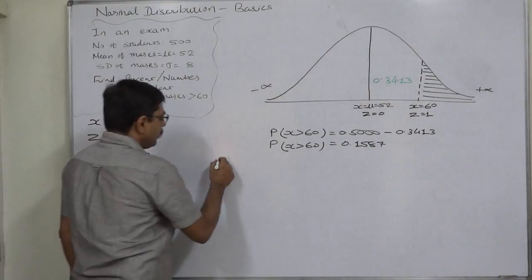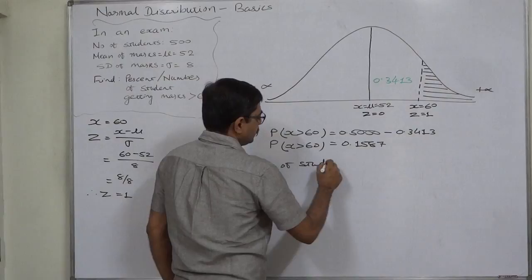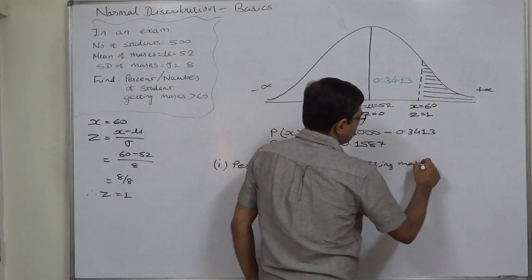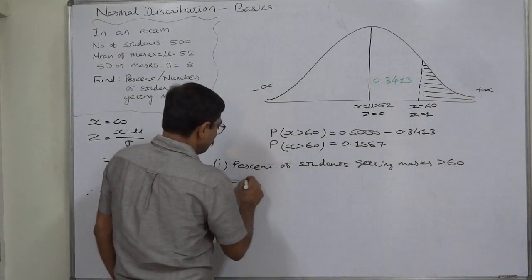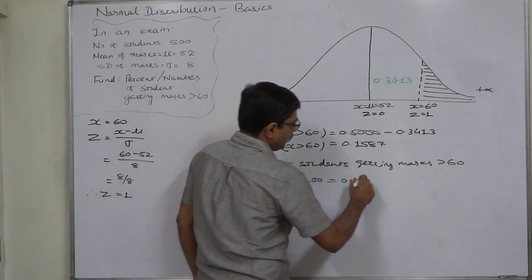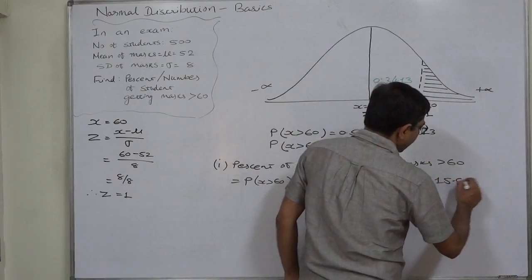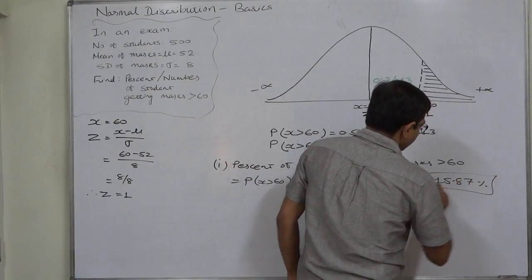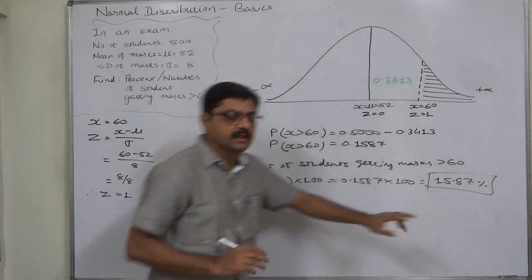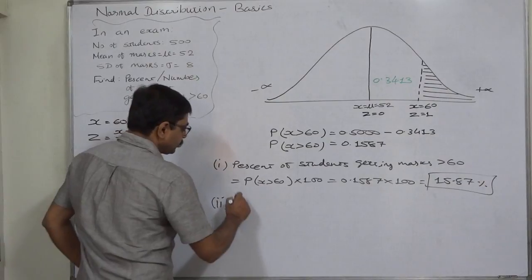The percent of students getting marks more than 60 equals P(X > 60) multiplied by 100, which is 0.1587 times 100, giving 15.87 percent. That means out of 500 total students, 15.87 percent obtained marks greater than 60.